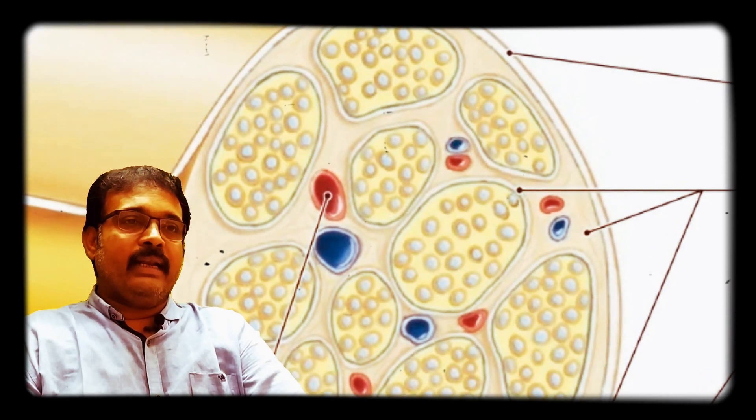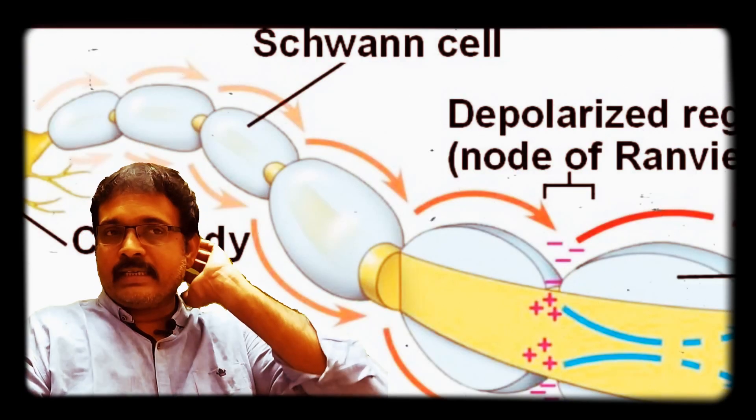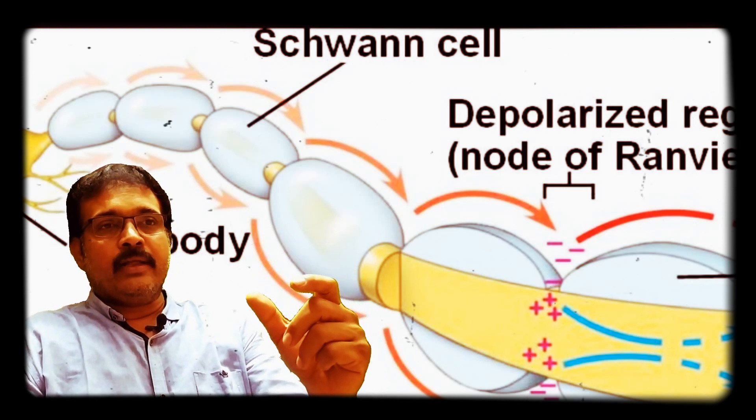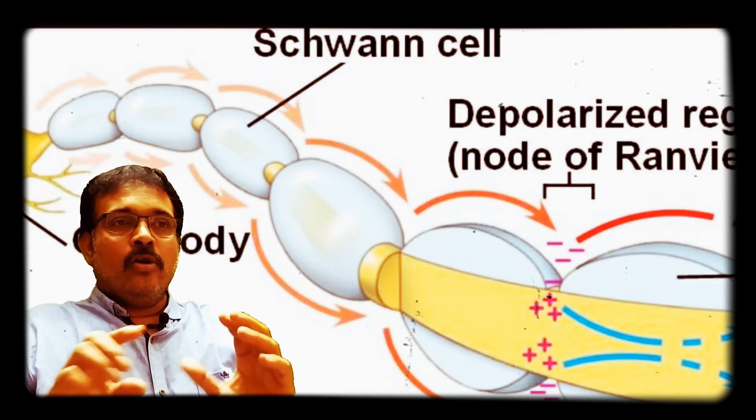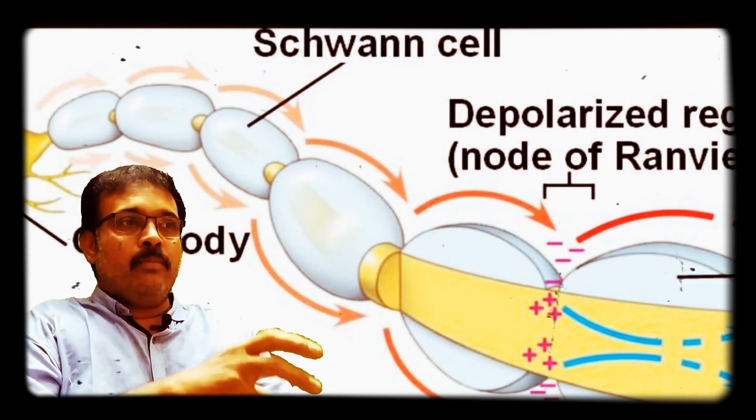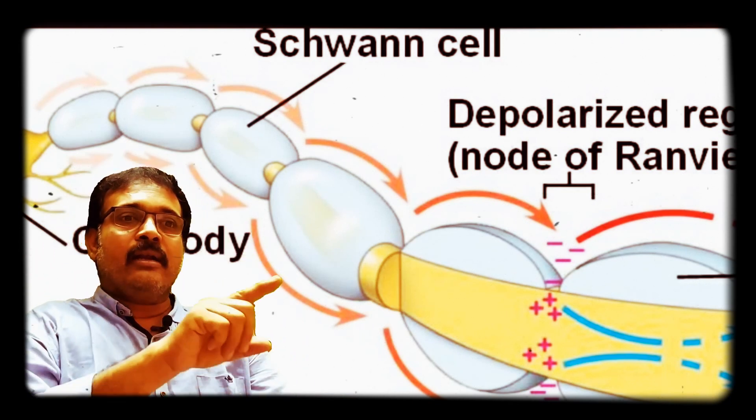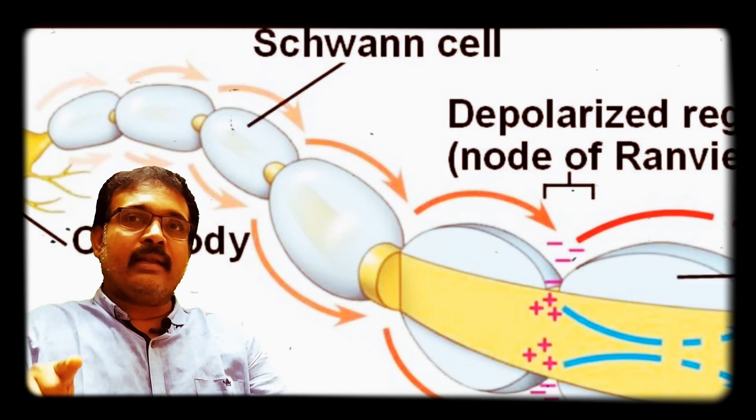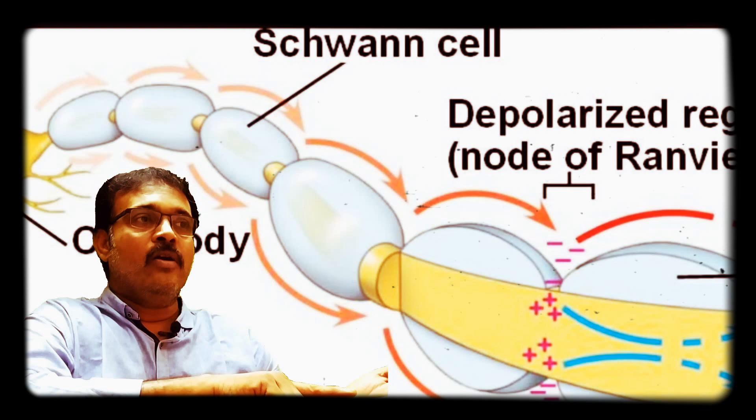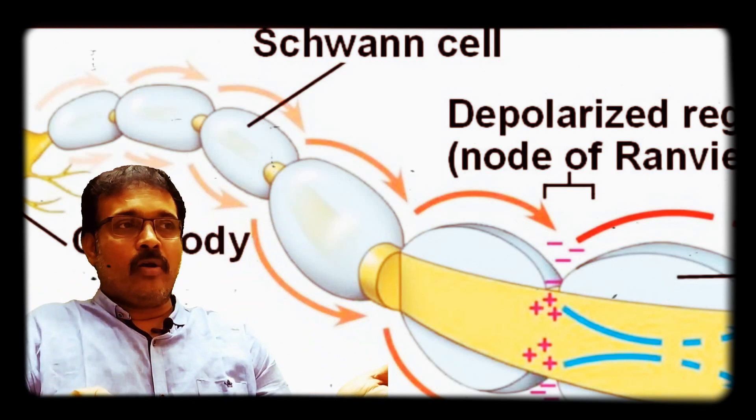Demyelinating disorder is considered as affecting nerve conduction. The axon has myelin with nodes of Ranvier. Impulses are propagated from one node of Ranvier to the next node of Ranvier.